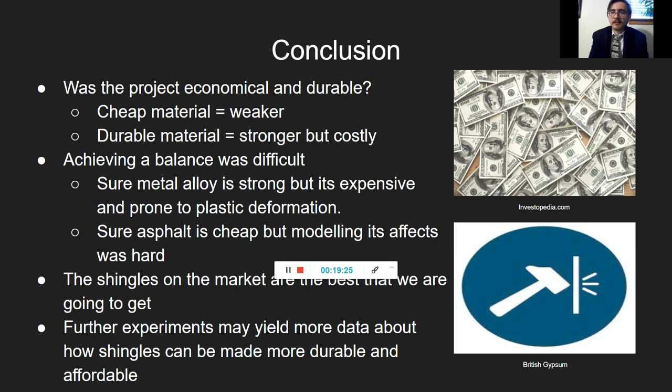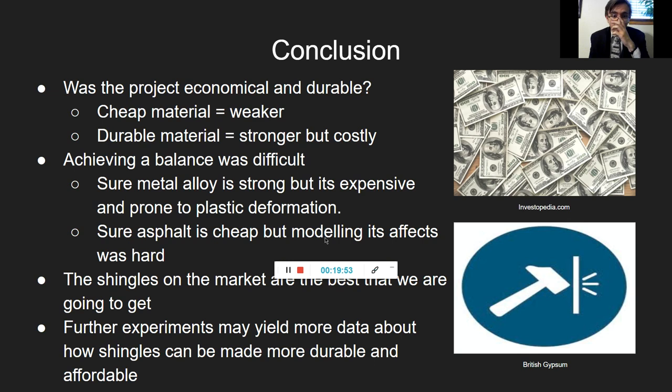In conclusion: was the project economical and durable? Honestly, no. The shingles already on the market are probably the better options, because cheaper materials like asphalt were weaker, and more durable materials like metal alloys cost a lot more — achieving that balance was difficult. Metal alloys are stronger but more expensive and prone to plastic deformation, as discussed, while asphalt is cheap but modeling its effects was also difficult since all its properties had to be manually typed in. That concludes my presentation — thank you so much for watching.